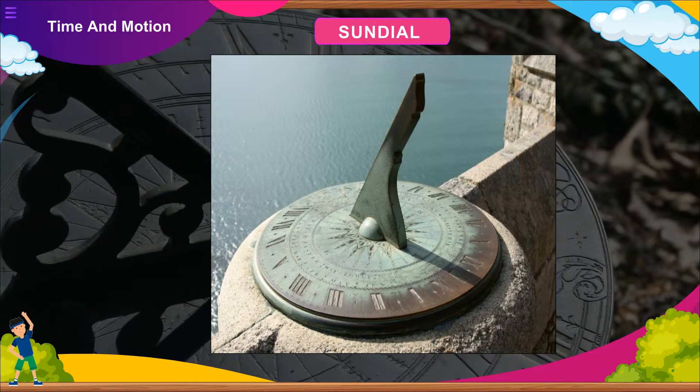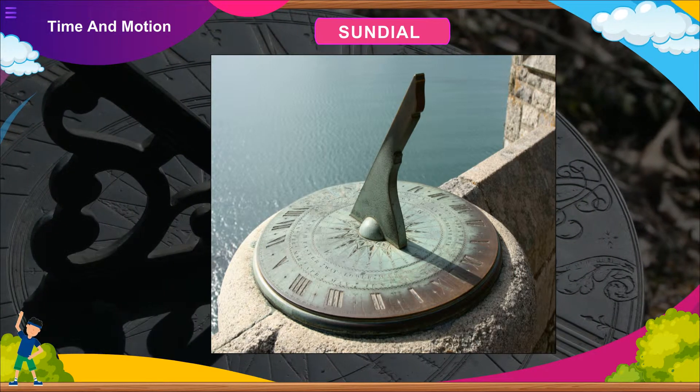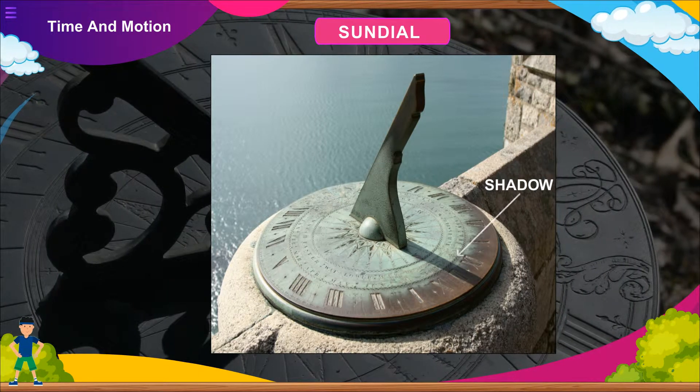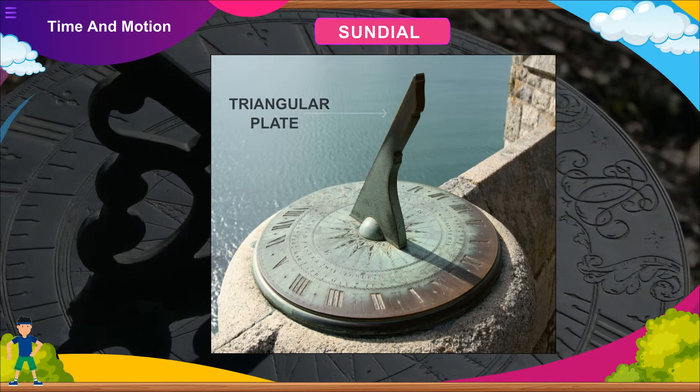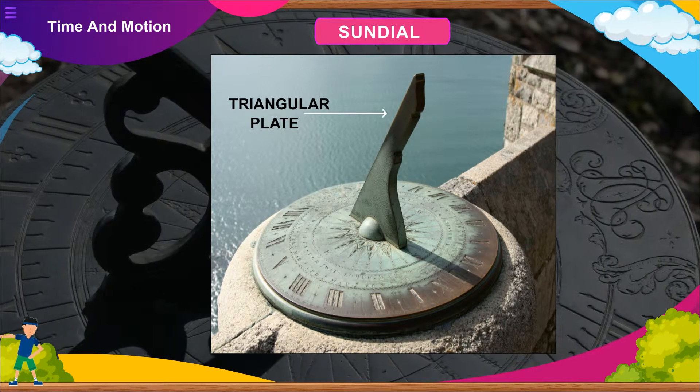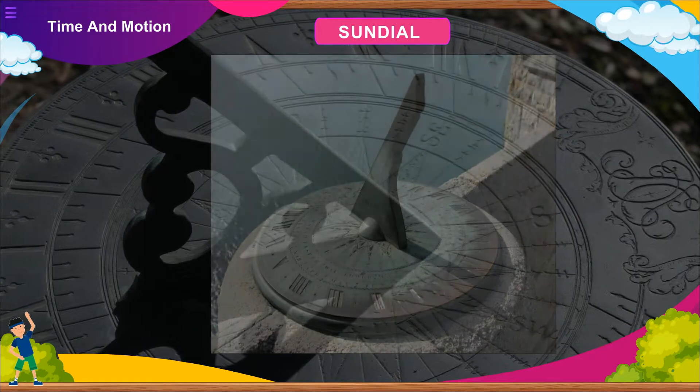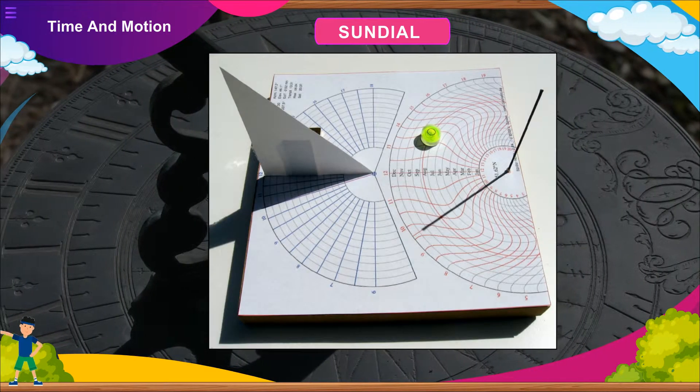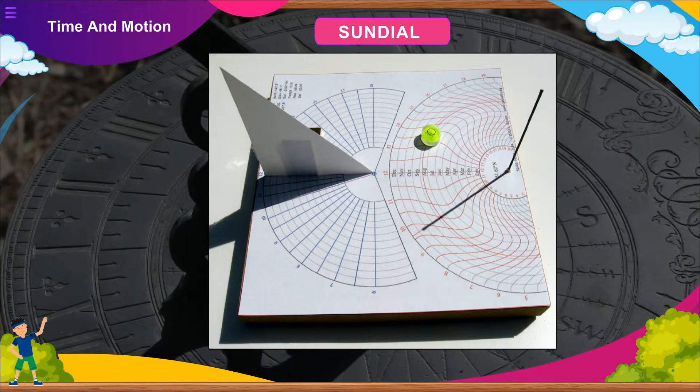Sundial: It is one of the primitive devices used to measure time. It is based on the fact that the shadow of an object changes its length and position with the position of the sun. The sundial consists of a piece of metallic triangular plate fixed vertically on a circular board in such a way that the plate casts a shadow on the board and the position of the shadow can be used to calculate the time.